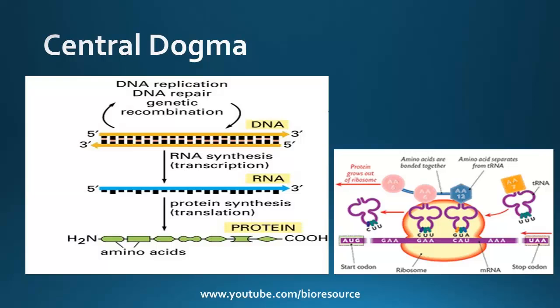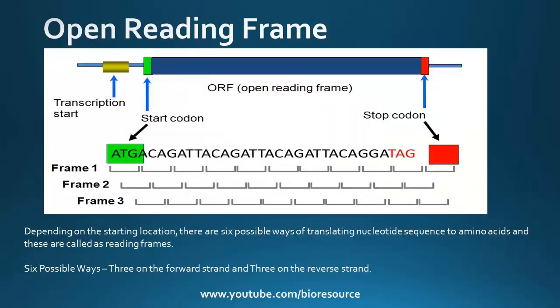The mRNA has the start codon and the stop codon, and the ribosome moves through this till it reaches the stop codon. Depending on the starting location, there are six possible ways of translating a nucleotide sequence to an amino acid based on the genetic makeup. These are called the Reading Frames. The six possible ways come from three from the forward strand and three from the reverse strand. The ORF region is the region between the start codon and the stop codon.